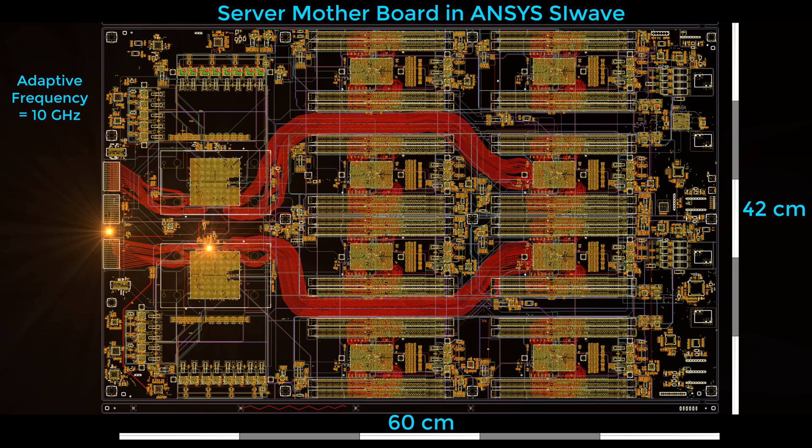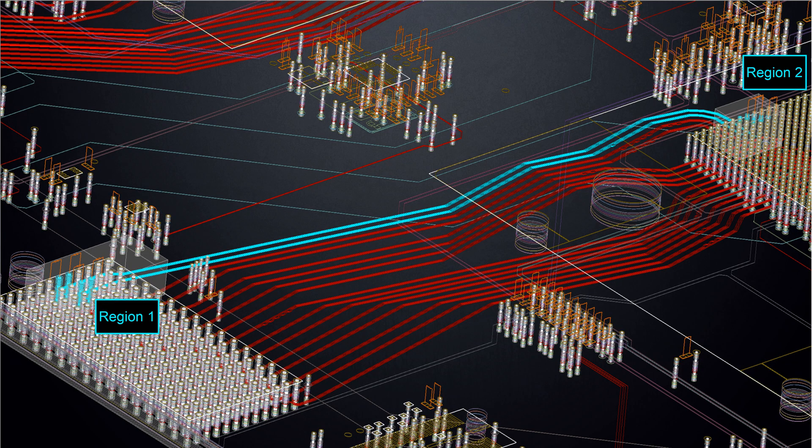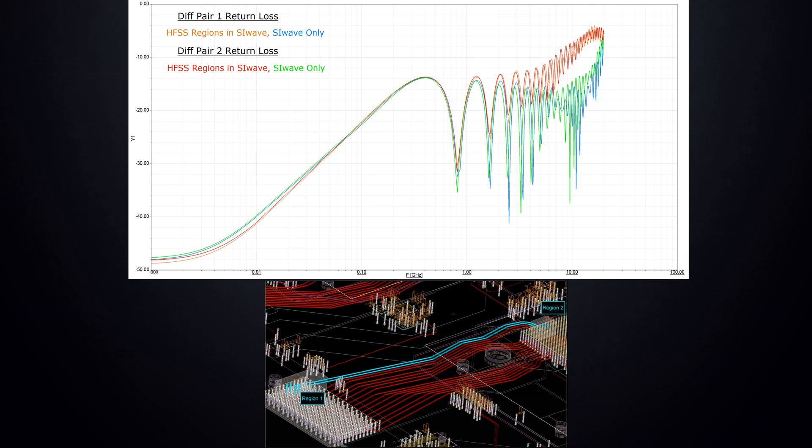This large motherboard was solved in ANSYS SI-Wave. Results from HFSS Regions in SI-Wave predict higher return loss for the PCIe 3 channel above 5 GHz.